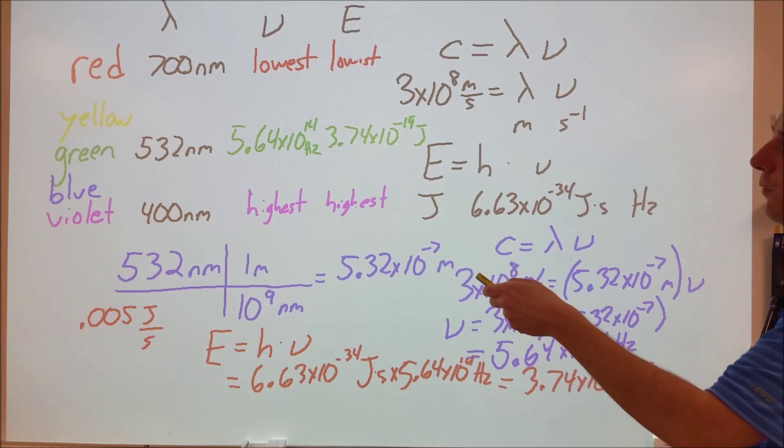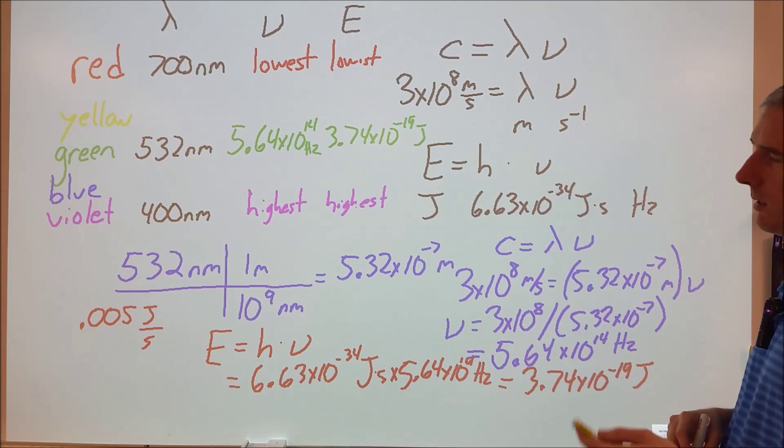Beyond violet, we would of course have ultraviolet. Before red, we would have infrared, then microwave and radio, and then X-ray and gamma after UV.